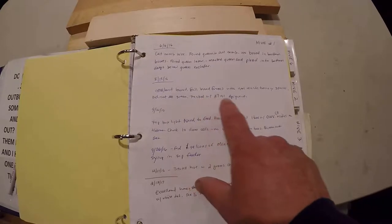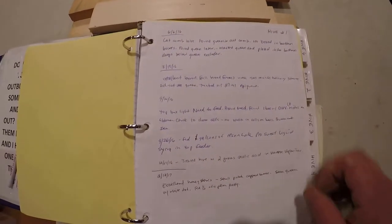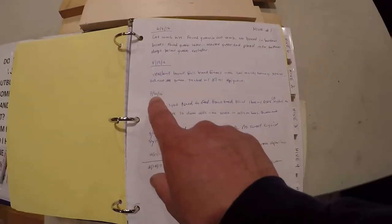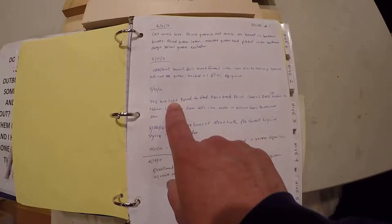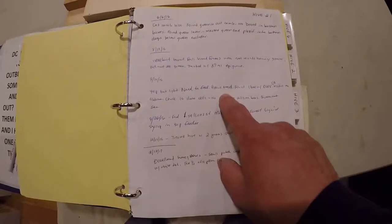I did not see the queen. I treated with 27 milliliters ApiGuard. That was per the directions on the container. As I was getting into the fall, 9-21-16, the top box was light of the two deep setups I had. I realized I needed to feed. Good brood.